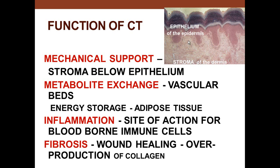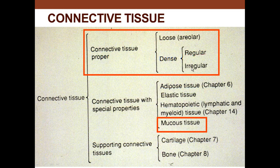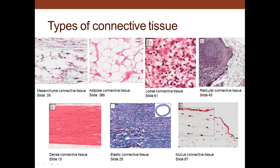Connective tissue is also involved with fibrosis, which is wound healing or overproduction of collagen material. There are different types: today we'll cover connective tissue proper with a bit of mucus connective tissue. Special connective tissues include hematopoiesis, and later we'll cover cartilage and bone. General connective tissue can be loose—more cells and fewer fibers—or dense, with lots of fibers and few cells. Dense tissue can be regular or irregular, with irregular found in capsules or the dermis.